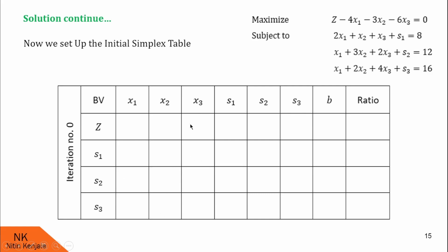Now we fill the boxes with the coefficients from the LPP. In the objective function, coefficients are minus 4, minus 3, minus 6. There is no s1, s2, or s3 in the objective function, so their coefficients are 0, and RHS is 0. In the first constraint, coefficients are 2, 1, 1. S1 has coefficient 1; there is no s2 and s3, so their coefficients are 0, and RHS is 8.